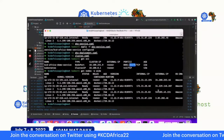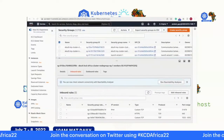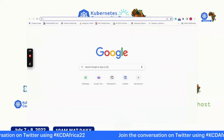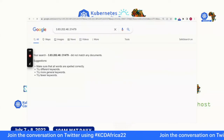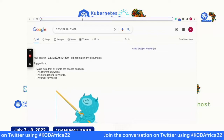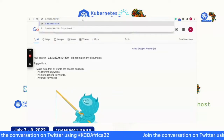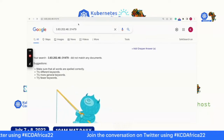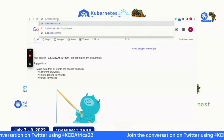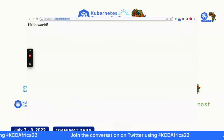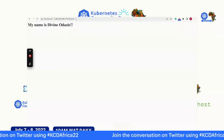Now you can access the application from any browser using the external IP address and port 31479. Copy one of the node's external IP addresses, enter it in the browser with port 31479, and you get 'Hello World'. Testing the name endpoint returns 'My name is Divine Odazier'. The application is successfully accessible externally.